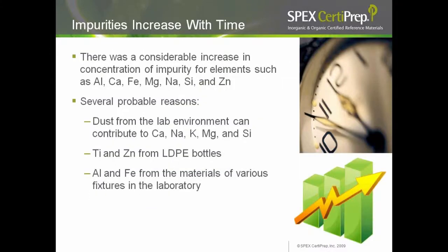Impurities can also increase with time. We found a considerable increase in concentration of elements such as aluminum, calcium, iron, magnesium, sodium, silica, and zinc over time. There are several probable reasons: dust from the lab environment can contribute calcium, sodium, potassium, magnesium, and silica; titanium and zinc can come from LDPE bottles; and aluminum and iron from materials of various fixtures used in the laboratory.